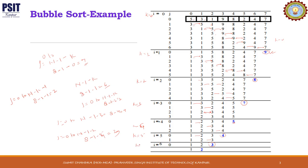Finally k is equal to 6. j is going to run from 0 to 8 minus 1 minus 6, equal to 1 time — j equals 0. We compare 1 and 2, no change. The seventh largest element is now at its proper place. Finally we got the sorted array: 1, 2, 3, 4, 5, 7, 8, 9. This is how bubble sort works.